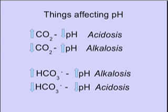This slide summarizes things that affect pH in the bloodstream. An increase in carbon dioxide drops the pH and causes acidosis, whereas a decrease in CO2 increases the pH causing alkalosis. On the other hand, an increase in sodium bicarbonate causes alkalosis, and a decrease in bicarb causes acidosis.